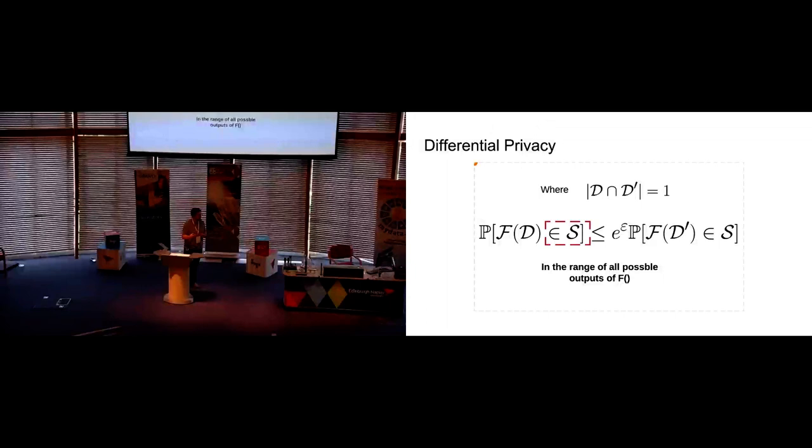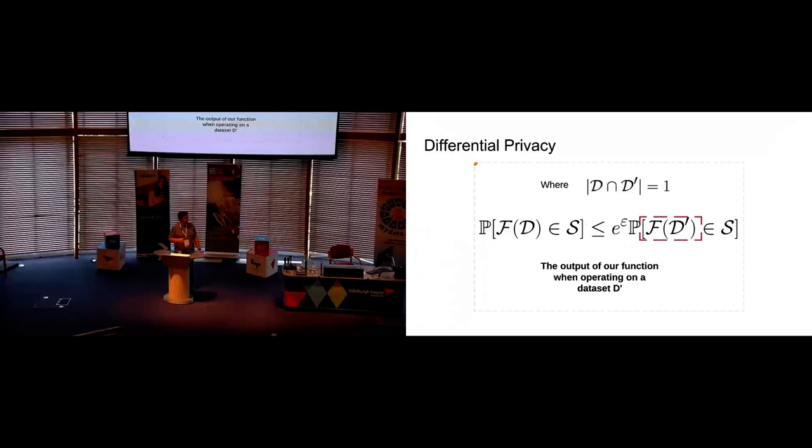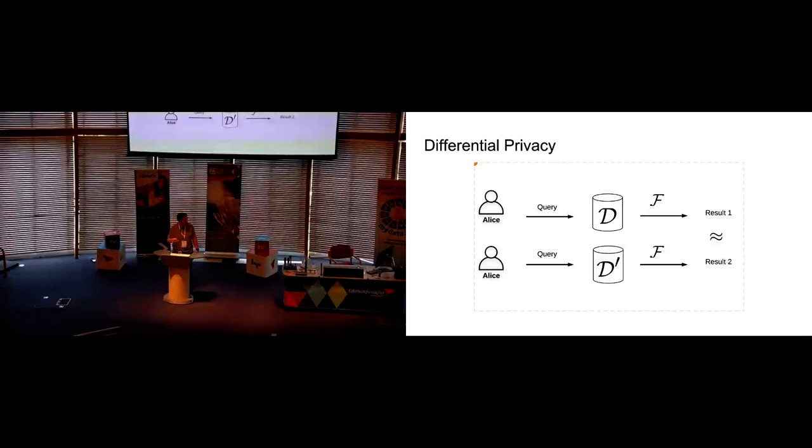And then we're saying that this is multiplicatively close by a factor of epsilon. This just means that the difference between these two functions is a matter of amplitude. So then we have the function operating on d prime, which is just the result that we get in this case for any potential value in the range s. Basically what we're saying is, if asked as a query on d, then the result of this query is going to be approximately the same as the result of the database if she hadn't done this query.